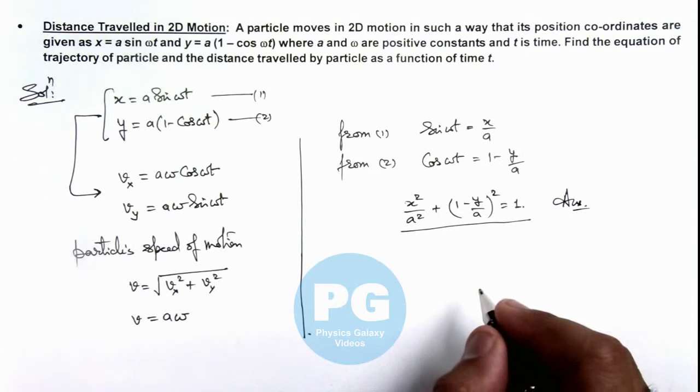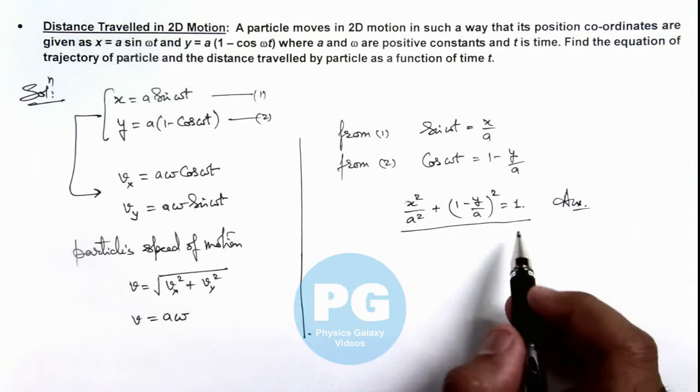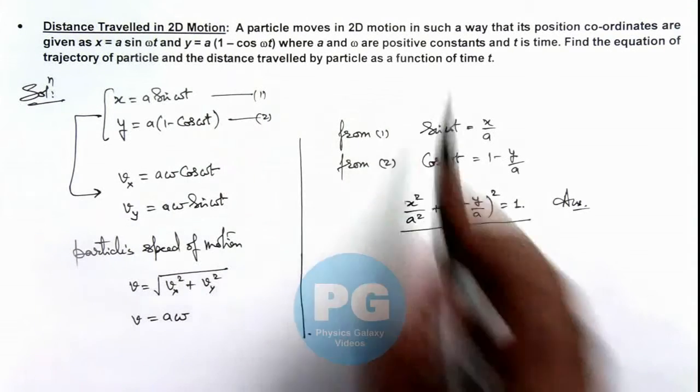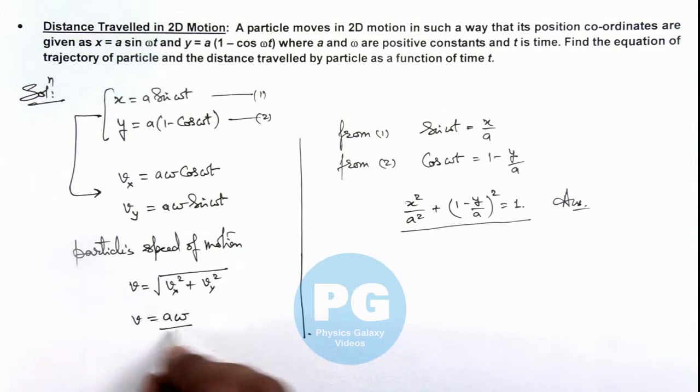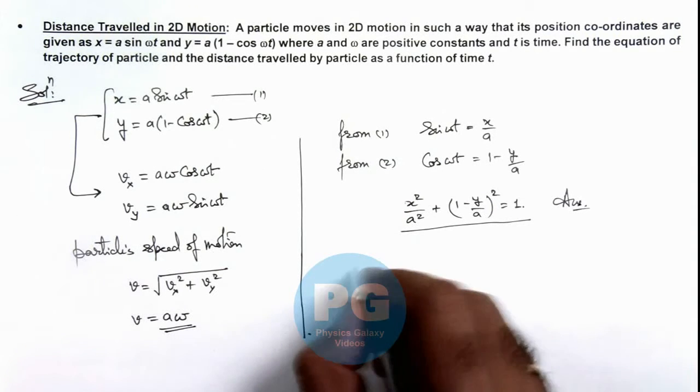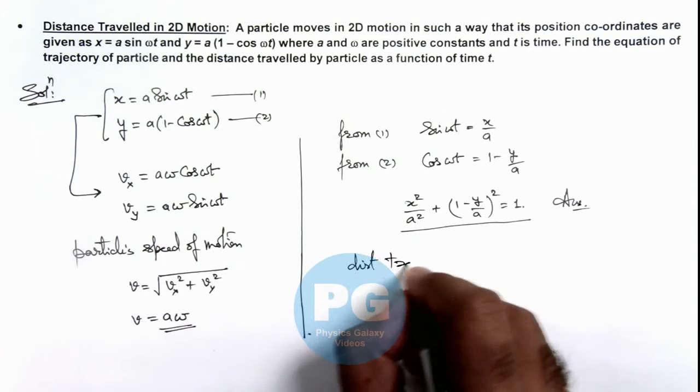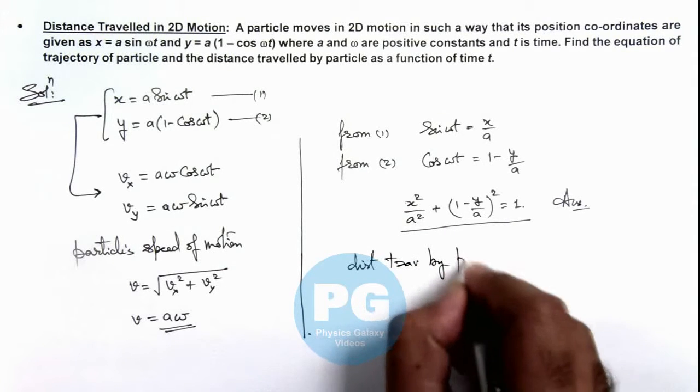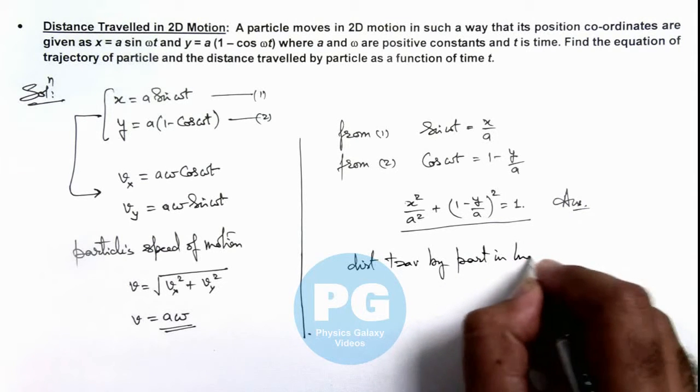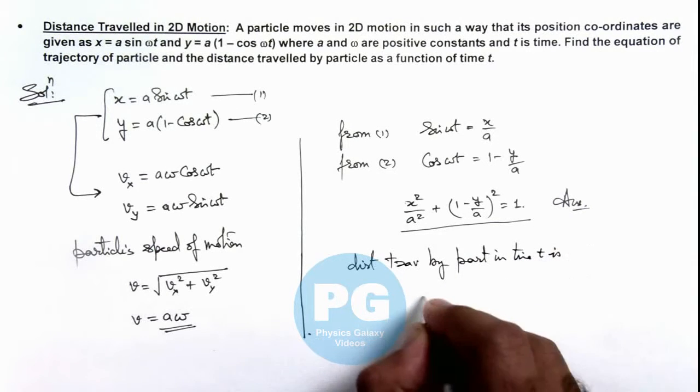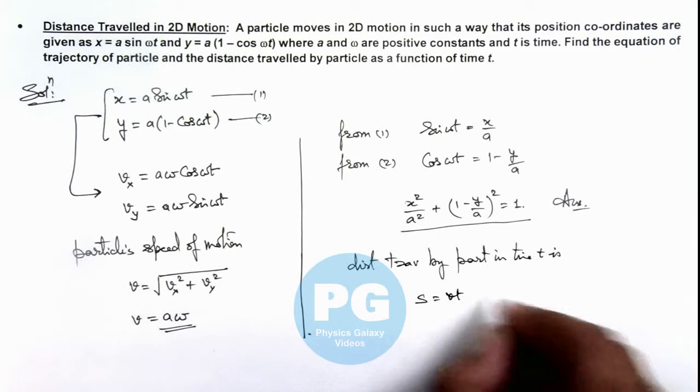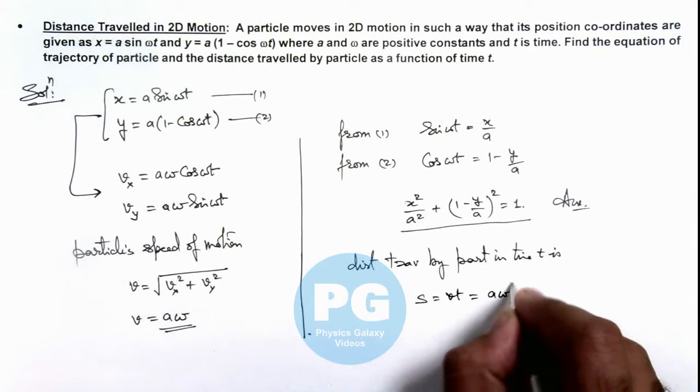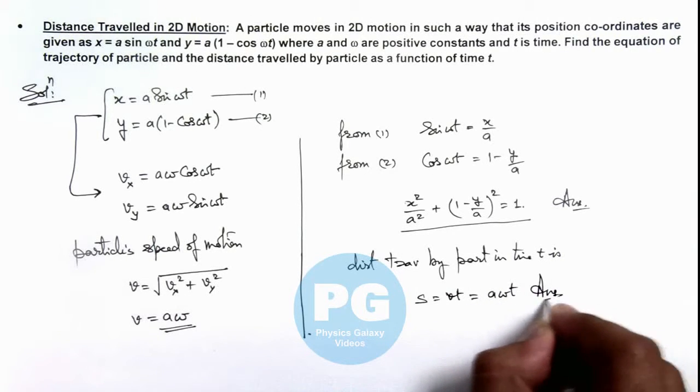If we wish to find out the distance traveled by the particle as a function of time, here it is moving at a uniform speed, so we can directly write the distance traveled by particle in time t is simply vt, which is aωt. That is the result for the distance traveled.